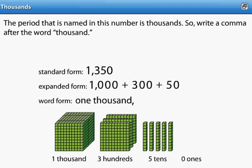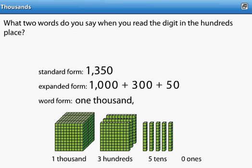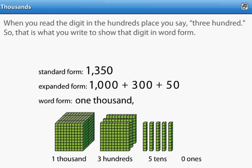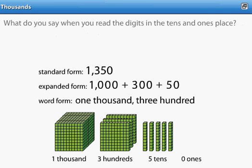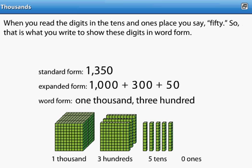When you read the digit in the hundreds place, you say "three hundred," so that is what you write to show that digit in word form. When you read the digits in the tens and ones place, you say "fifty," so that is what you write to show these digits in word form. The word form of 1,350 is one thousand, three hundred fifty.